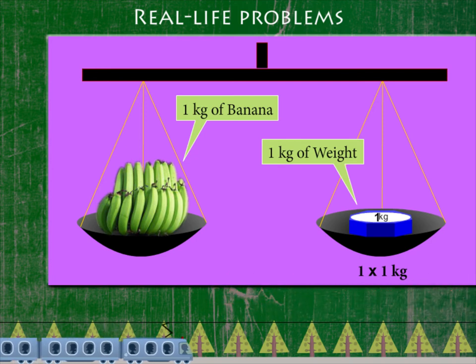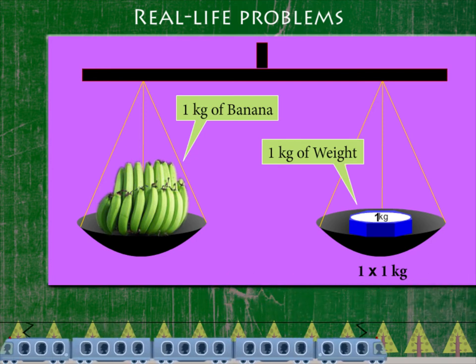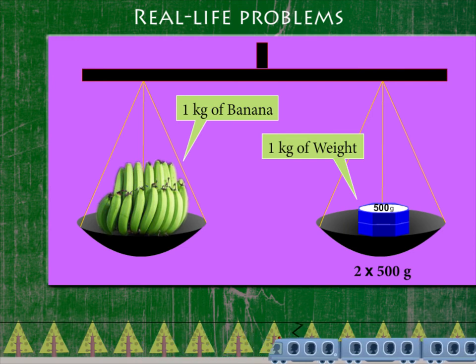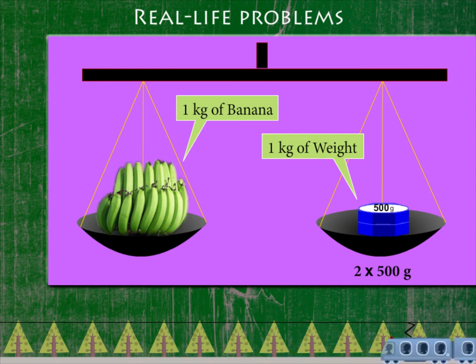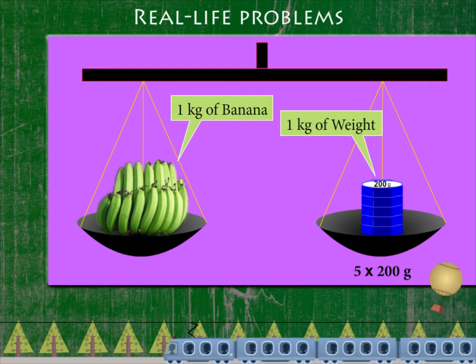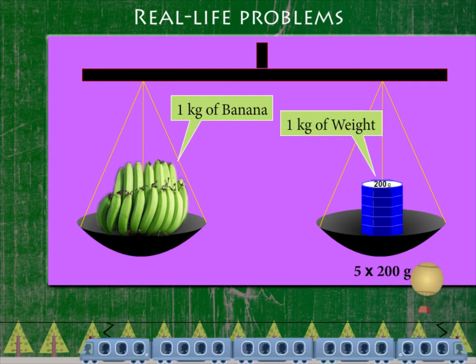1 kilogram weight is the same as 2 weights of 500 grams. It is also the same as 5 weights of 200 grams.